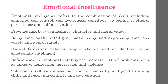Being emotionally intelligent means using and expressing our emotions wisely and appropriately. The psychologist and writer Daniel Goleman believes that people who do well in life tend to be emotionally intelligent. Good self-control, sensitivity to others, and appropriate expression of emotion help us have good relationships, be successful at work, and protect our health and well-being. Goleman suggests that deficiencies in emotional intelligence increase the risk for problems such as depression, aggression and violence, anxiety, eating disorders, and drug abuse. He believes the solution is to teach young people self-awareness, self-control, empathy, and abilities to listen, resolve conflicts, and cooperate.